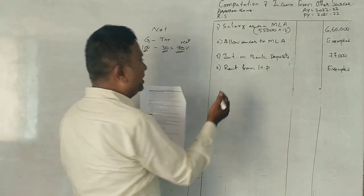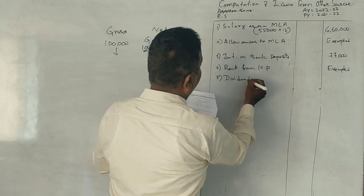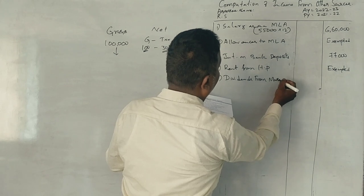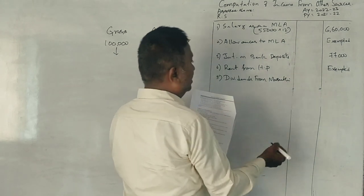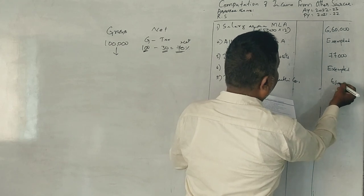Dividend from Maruti Suzuki company. Fully taxable. Dividend from Maruti company, 6,000. Fully taxable.